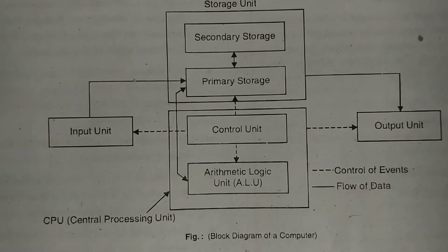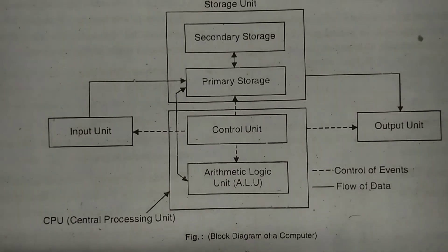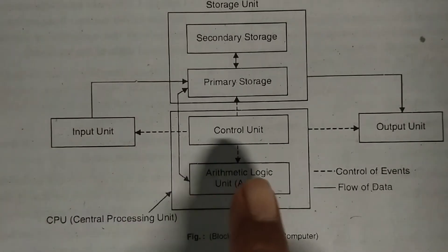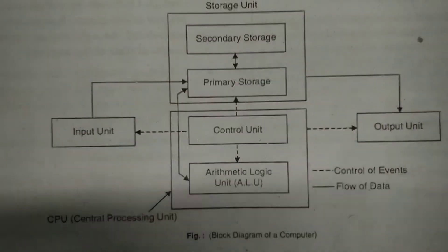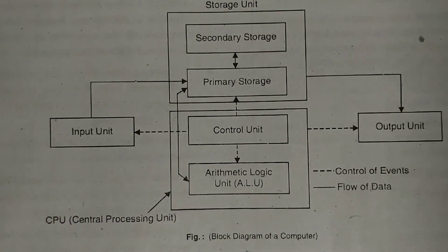In this first unit we will see what is the block diagram of a computer. A block diagram of a computer consists of three functional units: input unit, memory or storage unit, central processing unit, and output unit. Generally a computer consists of two parts: hardware and software.